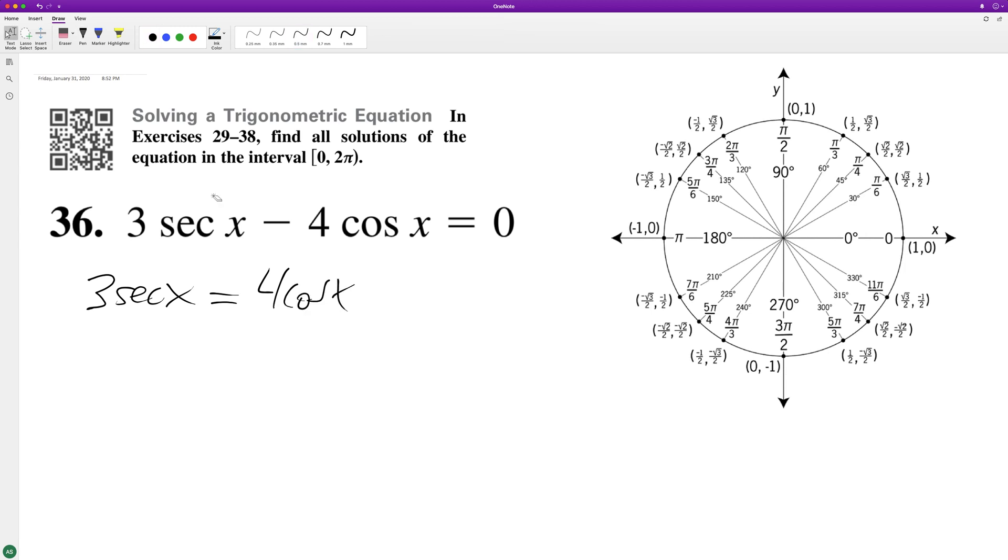This is the same thing as 1 over cosine, or we can write it as 3 over cosine x. Multiply both sides by cosine x, and we'll have 4 cosine squared x is equal to 3.